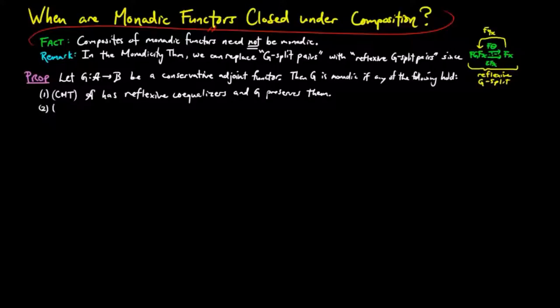Two, we say g satisfies the conditions of the vulgar monadicity theorem, provided a has split co-equalizers of g-split pairs. And three, we say that g satisfies the conditions for the weak monadicity theorem, provided a has co-equalizers and g preserves them.